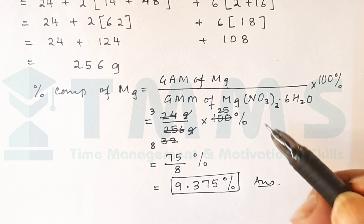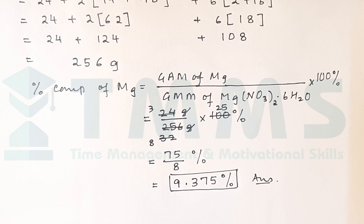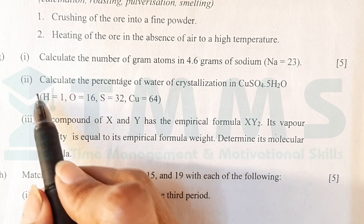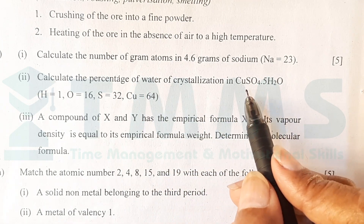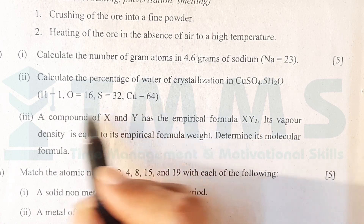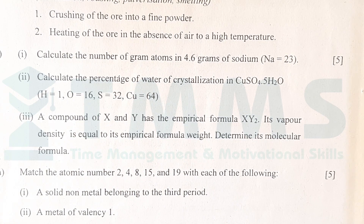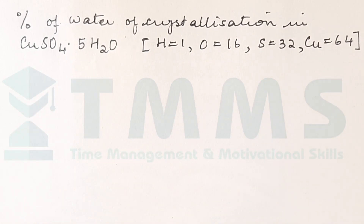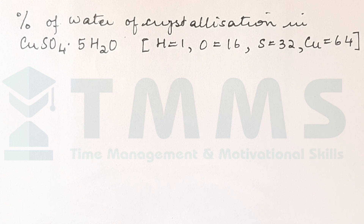This is how we apply the formula and get the answer. Now the 2017 question paper, second part: calculate the percentage of water of crystallization in CuSO4·5H2O, with all masses supplied. Tip 1 — finding masses — is already taken care of.